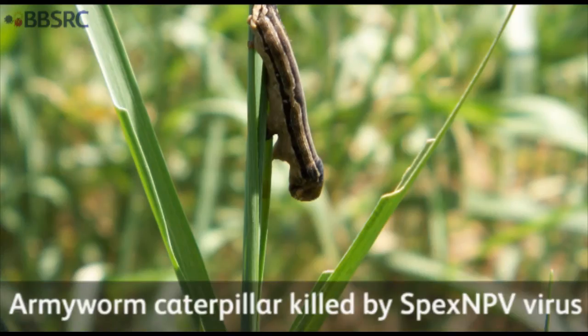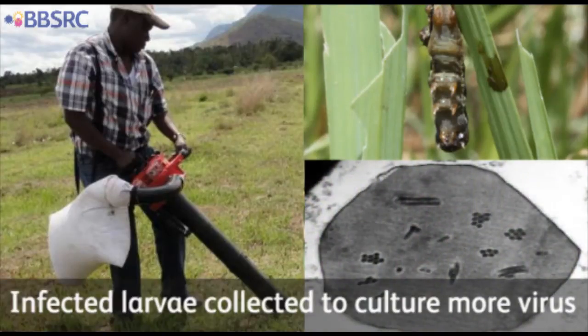African armyworms are subject to a number of different parasites including parasitic wasps, fungi, and importantly from our point of view, a baculovirus SPEX-MPV. What we wanted to do during the BBSRC-funded project was to try to understand what levels of virus we see in the natural environment, in natural outbreaks of armyworms, how variable that was, why it was variable, and importantly how we can use that variation in virus disease to better target our control efforts against armyworms using SPEX-MPV as a biological control agent.